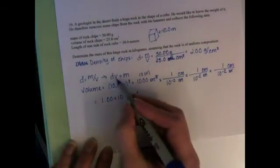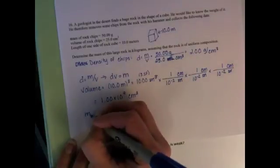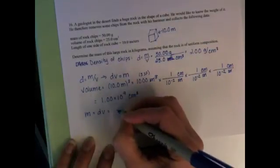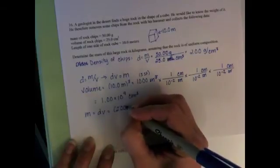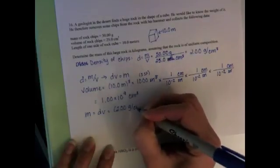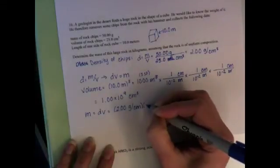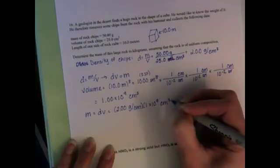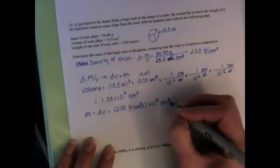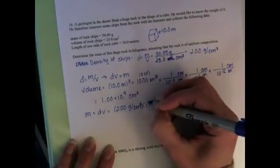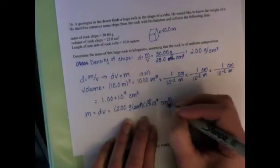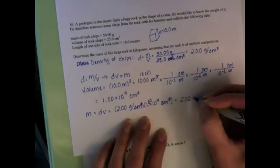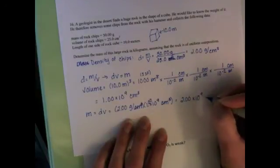And so now we're just going to use this equation right here that we derived from the density equation. The mass is equal to the density times the volume. The density is 2 grams per cubic centimeter. The volume is 1 times 10 to the 9th cubic centimeter. I don't know why I dropped those sig figs off. The units of cubic centimeter will cancel. And we're going to end up with 2 times 10 to the 9th grams.